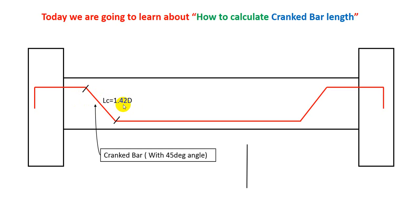What is the value of D? D is the distance between the top bar and bottom bar - the center-to-center distance. This is D. If we multiply that D by 1.42, then we'll find our LC. This is a thumb rule.